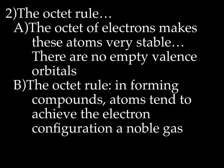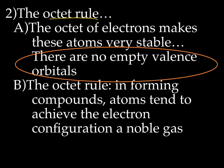But helium has the maximum number of valence electrons because energy level one only has an S orbital. So we have something called the octet rule. The octet, the S2P6, makes these atoms really, really stable — they have no empty valence orbitals, and that's what every single atom wants. That's the goal of every atom. In forming compounds, atoms tend to achieve the electron configuration of a noble gas.